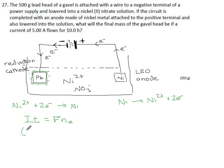The current is 5 amps. The time is 10 hours, which is 36,000 seconds. The Faraday constant is 96,500. Then we have a number of moles of electrons which we don't know yet. So 5 times 36,000 divided by 96,500 will get us... the number of moles of electrons is 1.8653 moles of electrons.